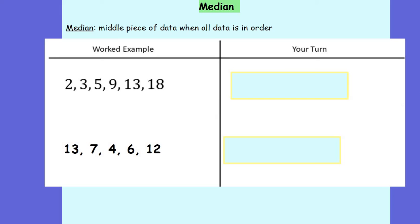In your dark blue books, can you write the title 'Median', and underneath write: Median — the middle piece of data when all data is in order. Pause the video and complete that now, and then I'll go through two examples, and then there'll be two for you to do.